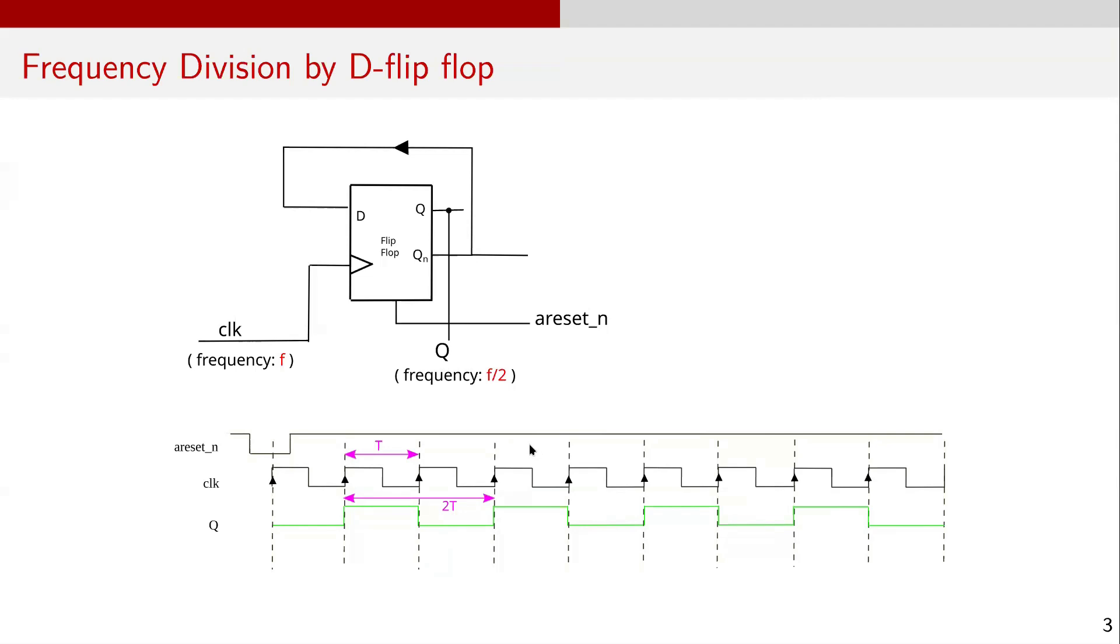First is the frequency division using a D flip-flop. If the output Q bar of a D flip-flop is fed back to its D input and a clock signal of frequency f is applied at the clock, the output Q toggles at every rising edge of the clock. As a result, the output at Q has a frequency of f over 2.